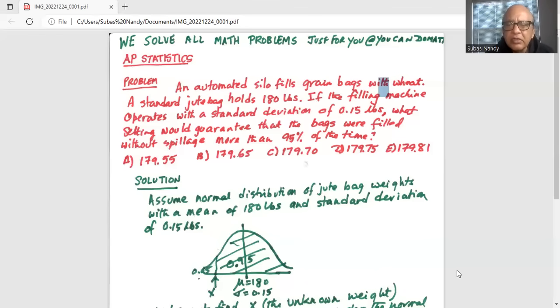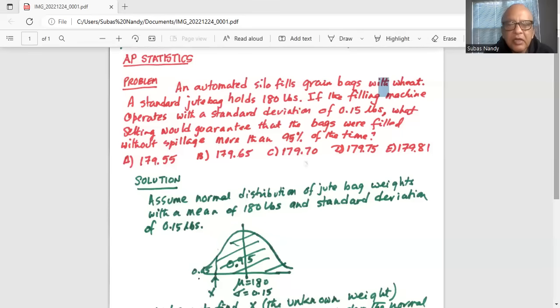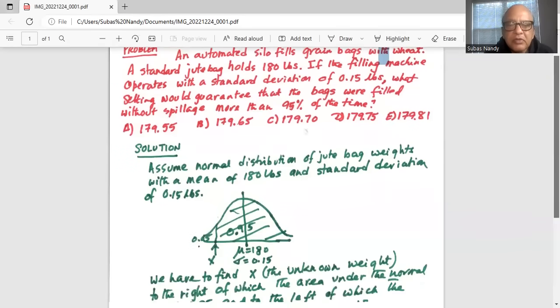I'll read the problem again. Normal distribution of jute bag weights with a mean of 180 pounds and standard deviation of 0.15 pounds. So I've drawn a diagram of the normal probability distribution.